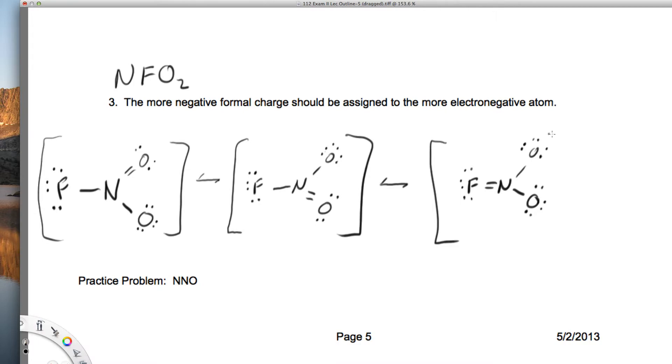You really should review drawing these structures on your own using Lewis structure methods by figuring out the total number of electrons. I didn't take the time to do that. Now I would like to assign formal charge to every one of these atoms.